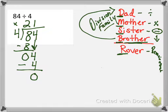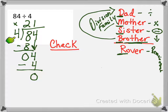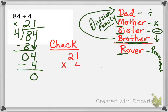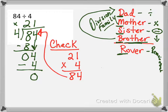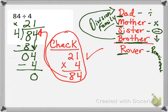Now we have to check. The inverse operation of division is multiplication. So we take this number and multiply it with our answer to see if we get the number inside the division house. So we do 21 times 4: 1 times 4 is 4, 4 times 2 is 8 — and look, we have that same answer, 84. So we most likely did it correct. Boys and girls, in this lesson when we get to our questions, we should not be getting anything wrong, because the very important part is to check using the inverse operation of multiplication.